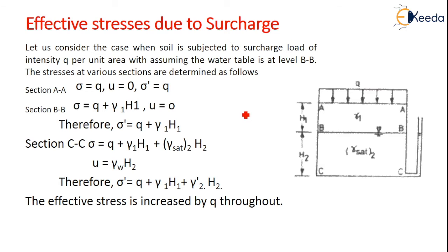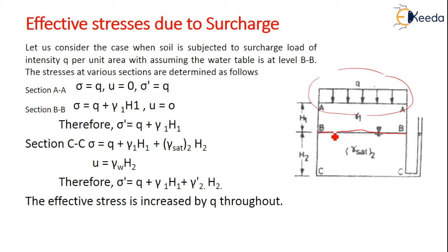Coming to effective stress due to surcharge: consider the case when soil is subjected to a surcharge load q per unit area, with the water table at level BB. At section AA: total stress sigma = q, pore water pressure u = 0 (no water table), so effective stress sigma' = q − 0 = q.